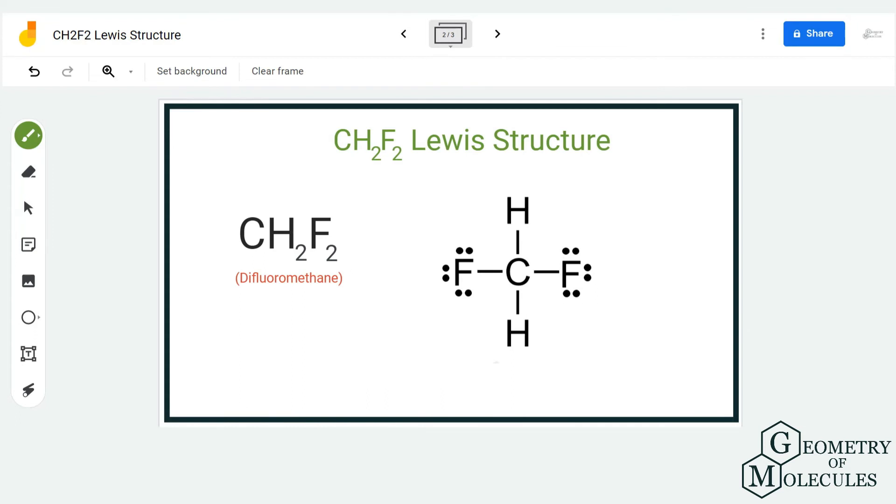Now let's see if the octets are complete. Fluorine atom here has eight valence electrons after sharing one electron with carbon. Hydrogen atom has two valence electrons in its outer shell and has attained a stable structure. Carbon atom, as it is sharing four valence electrons with four atoms, has a complete octet. So as all the atoms have complete octets, this is the Lewis structure for difluoromethane.